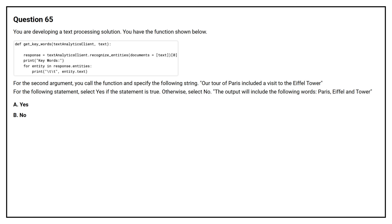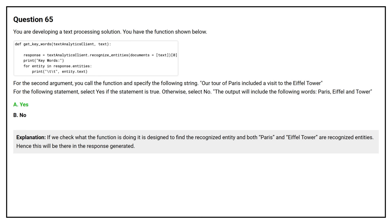Question number 65. You are developing a text processing solution. You have the function shown below. For the second argument, you call the function and specify the following string: 'Our tour of Paris included a visit to the Eiffel Tower.' Select yes if the statement is true, otherwise select no. The output will include the following words: Paris, Eiffel, and Tower. Option A: Yes. Option B: No. The correct answer is Option A: Yes. The function is designed to find recognized entities, and both Paris and Eiffel Tower are recognized entities. Hence, they will be present in the response generated.